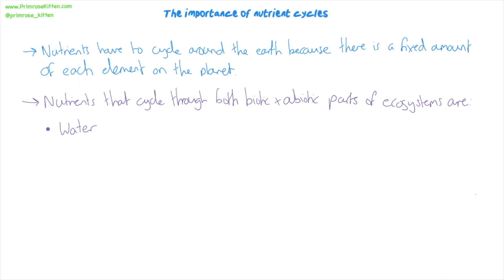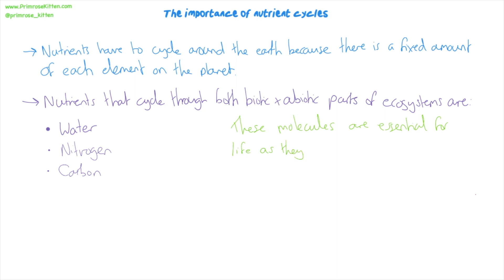So water is one of them, we're going to look at that today. Nitrogen is another one, and carbon is another example of nutrients that cycle. These nutrients are all essential for life because they contain elements — or they are elements — that are needed to make molecules that organisms need to survive and grow. It's the molecules that are essential for life itself.